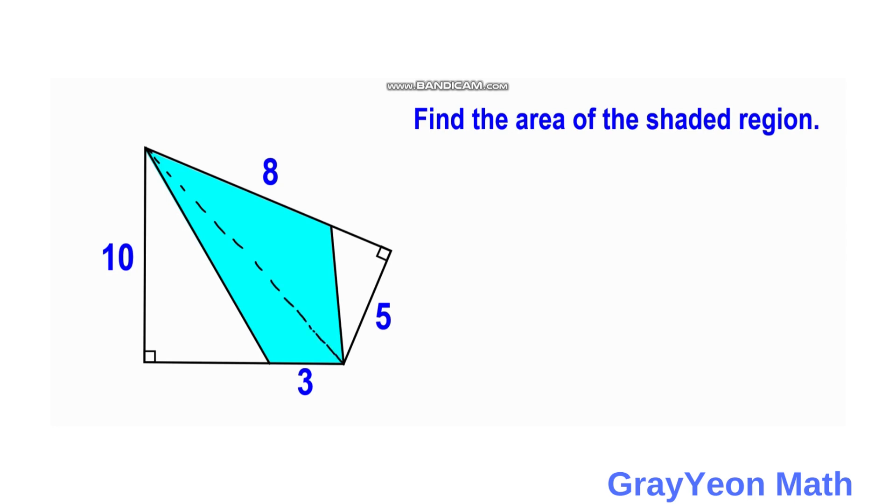And notice that we actually form two right triangles - two right triangles with a portion which is unshaded and the shaded part. So we actually divided this shaded portion into two by means of the line that we have drawn.